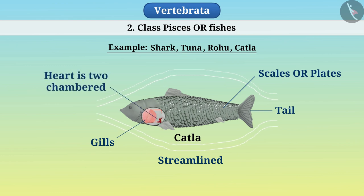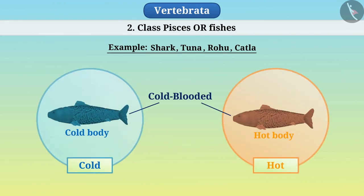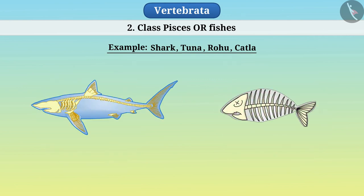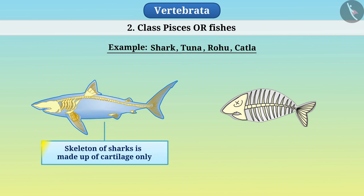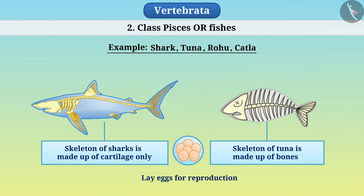Their heart is two-chambered. They are cold-blooded, meaning their body temperature does not remain constant. The skeleton of some fish such as sharks is made of cartilage only, while the skeleton of other fishes such as tuna is made of bones. They all lay eggs for reproduction.